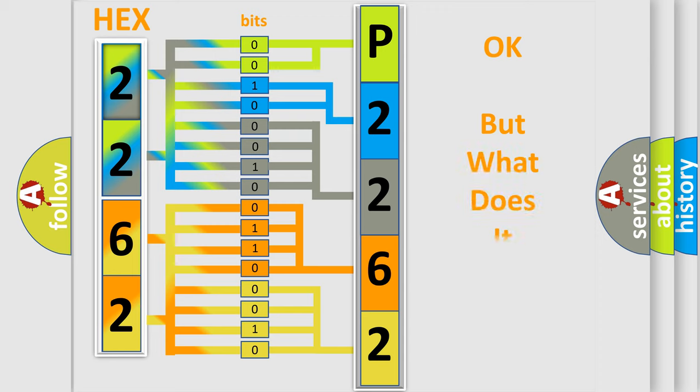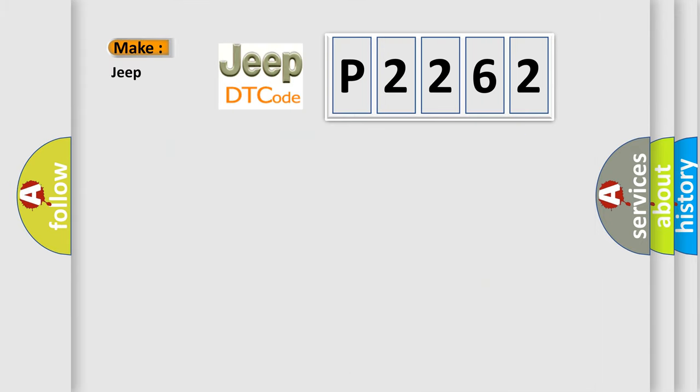The number itself does not make sense to us if we cannot assign information about it to what it actually expresses. So, what does the diagnostic trouble code P2262 interpret specifically for Jeep car manufacturers?